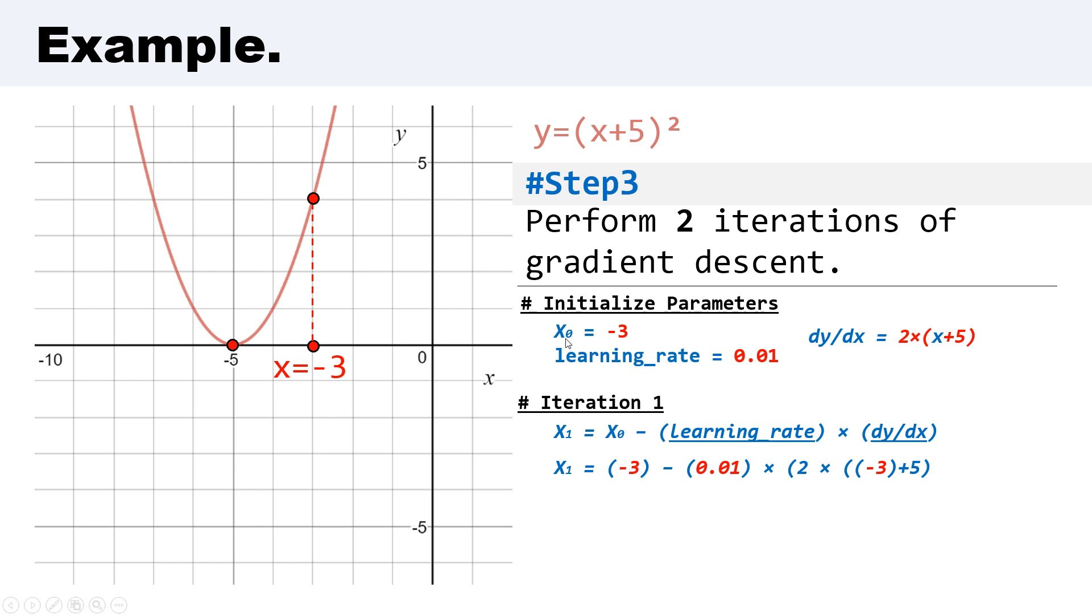x₁ = -3 minus 0.01 (the learning rate) multiplied by 2 multiplied by the gradient (-3 + 5).